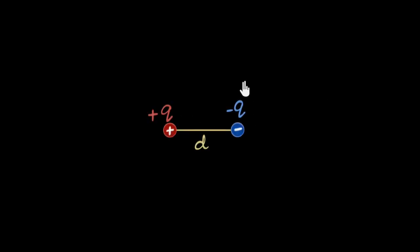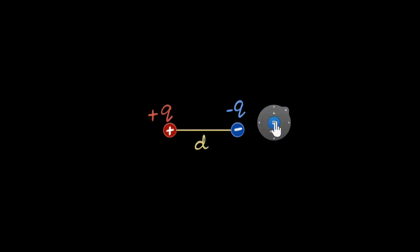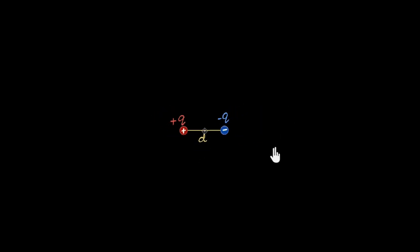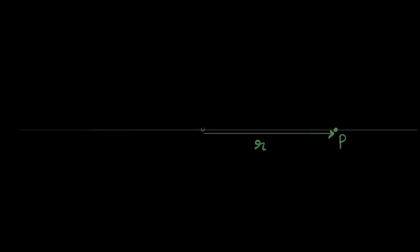Suppose I have an electric dipole, which is basically two equal and opposite charges separated by some distance. Imagine I go far away from this dipole — I zoom out so much that the dipole looks like a single dot to me. The goal of this video is to derive an expression for the electric field somewhere far away on the axis of the dipole.